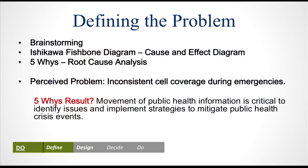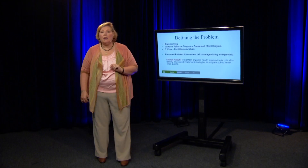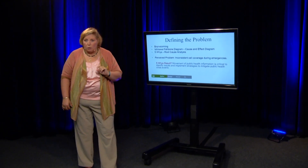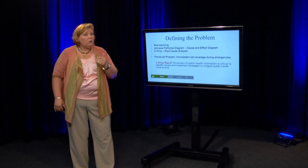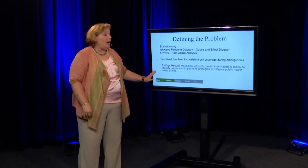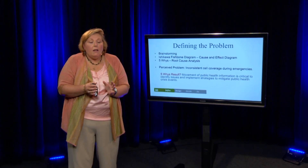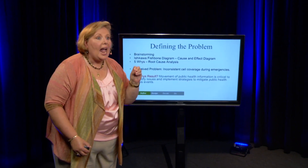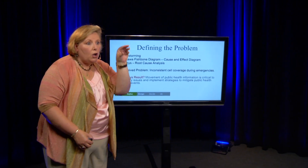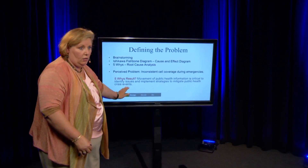By the time this group got to the fifth why, the result was: movement of public health information is critical to identify issues and implement strategies to mitigate public health crisis events. That is truly where the rubber meets the road. If you were to do the five whys too early in a process, it may narrow the issue too early. So you do need to take time to brainstorm, pull collective information from your stakeholder group, then cluster, refocus, refine, and do the five whys.